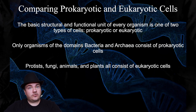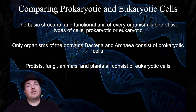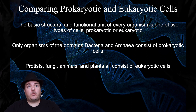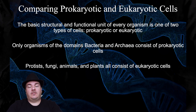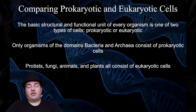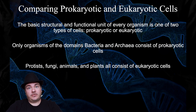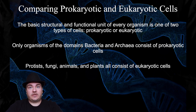Recalling back to the first chapter, one of the things we learned is that there are three domains of life. Everything on this planet fits into one of those three domains: bacteria, archaea, and eukarya. The domains bacteria and archaea are made out of a type of cell called a prokaryotic cell, which, for simplicity, we define as a cell that does not have a nucleus.